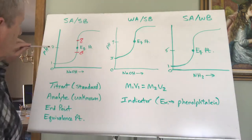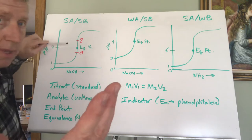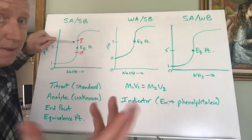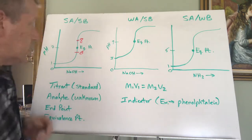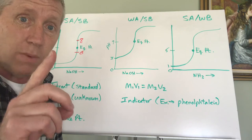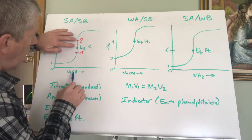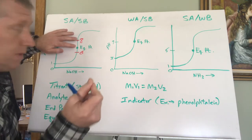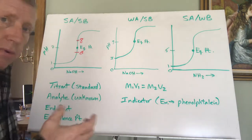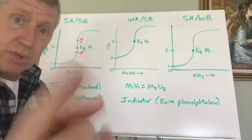You might wonder: if the equivalence point for strong acid and strong base is pH 7, and phenolphthalein turns color around pH 8, haven't you missed the equivalence point? What you've actually done is add about one extra drop. Look at how steep the curve is — you don't have to add very much at all for the color to change. One drop and you're done. It's close enough to the equivalence point that it's acceptable.